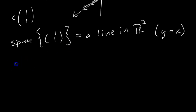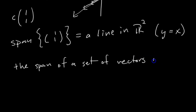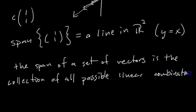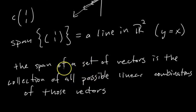Here's a nice definition: the span of a set of vectors is the collection of all possible linear combinations of those vectors. In English, the span of a set of vectors is the collection of all possible linear combinations you can make using those vectors.